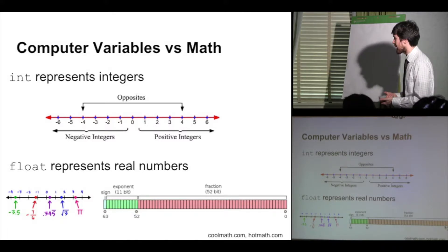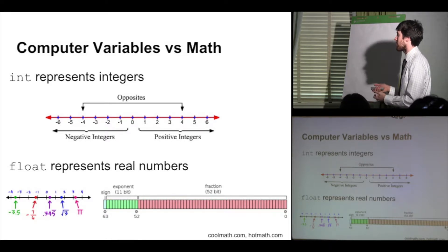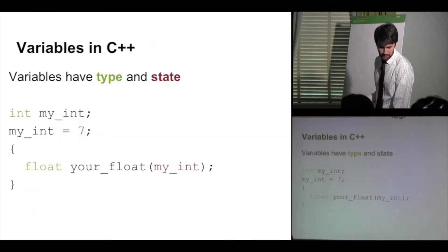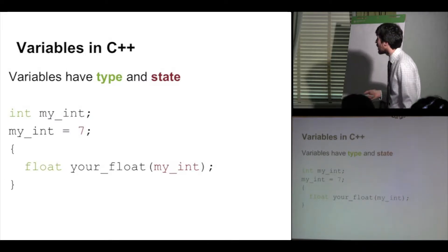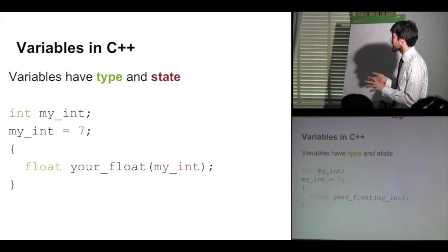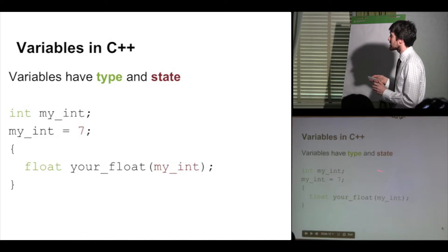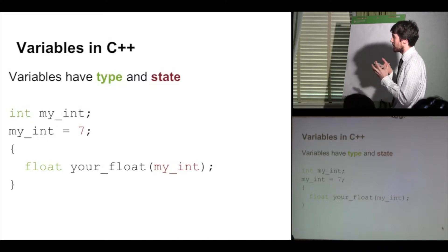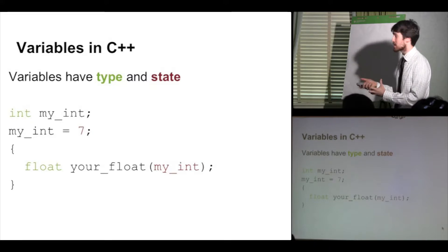Jack is going to come back and talk about numeric precision and how to write geometric algorithms that deal with issues of overflowing precision on Friday. An important idea to start with is what is a variable in C++. The important part of a variable is that it has a particular type — you can say what it is — and it also has state, a specific value at a particular time.